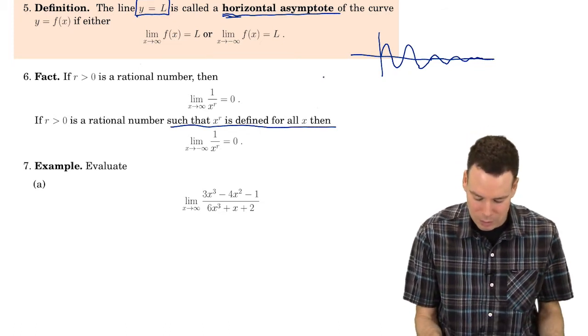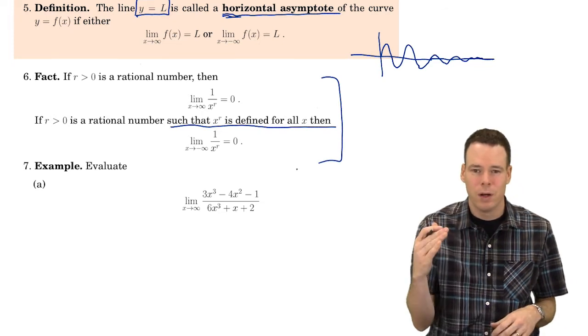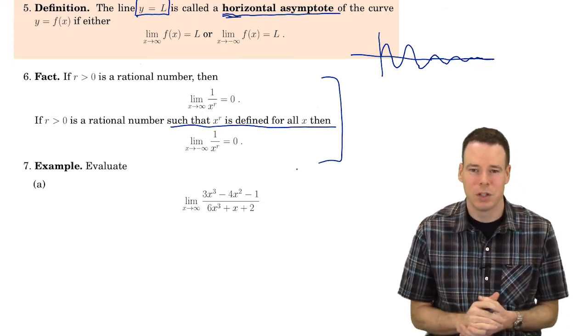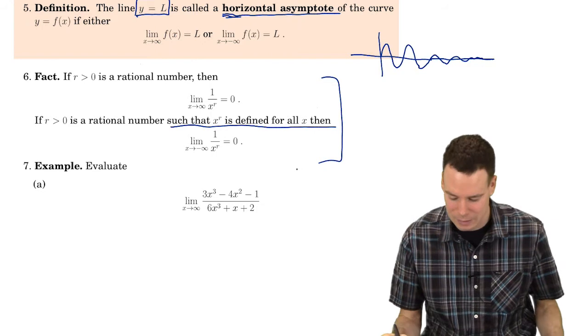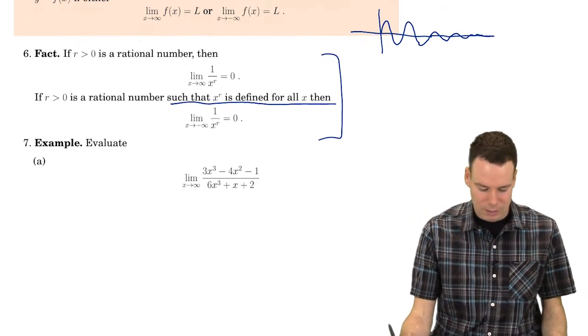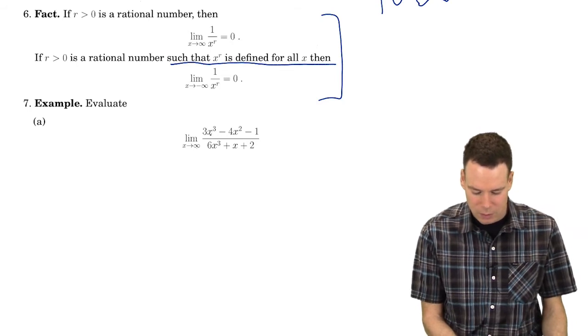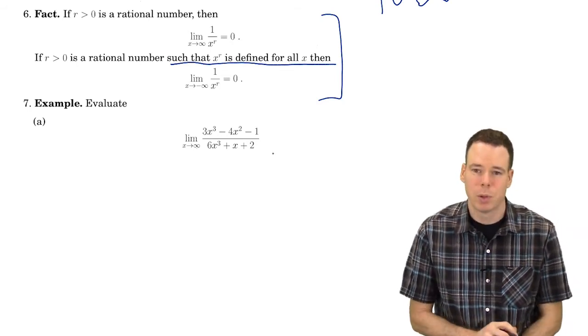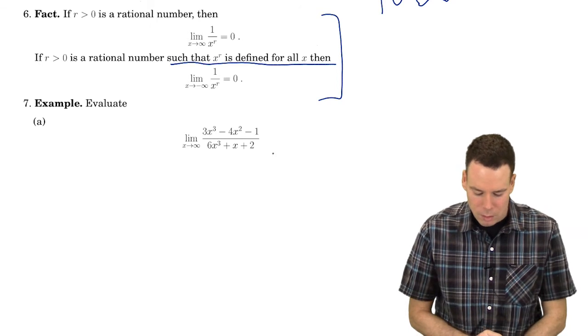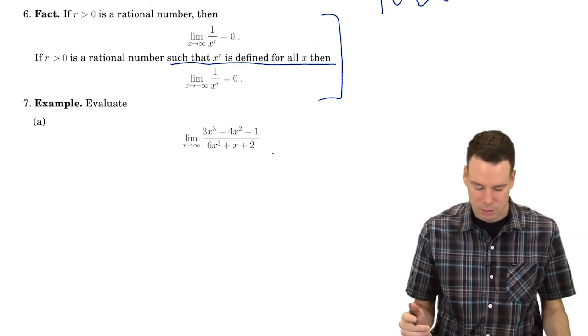So to sum these two statements up, it's really just saying if you've got 1 over something that's getting big, then the ratio is going to 0. And we're going to use this again and again. So let's get to the examples. Let's evaluate the limit as x goes to infinity of this cubic polynomial over this other cubic polynomial.